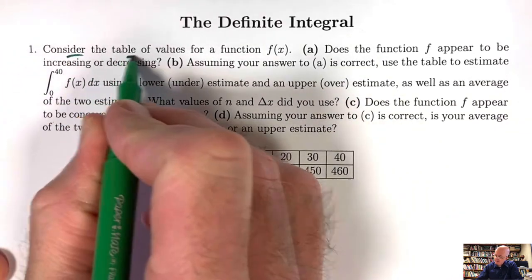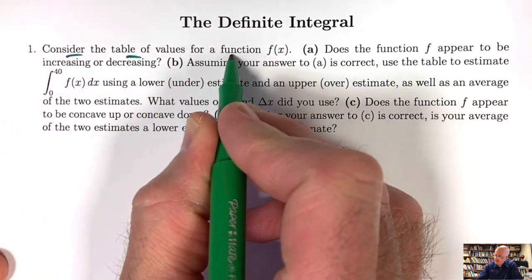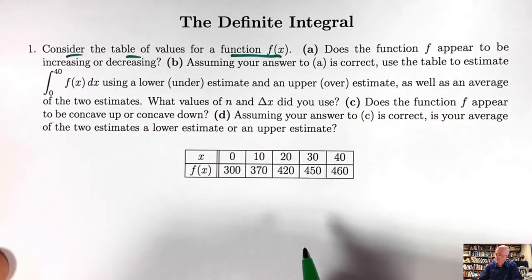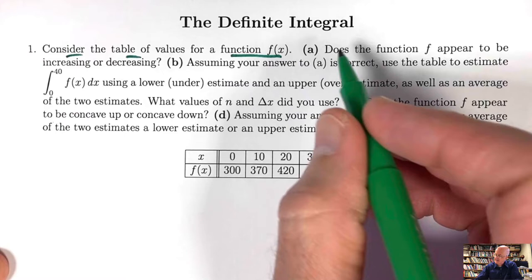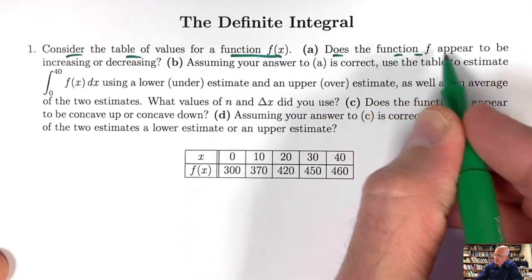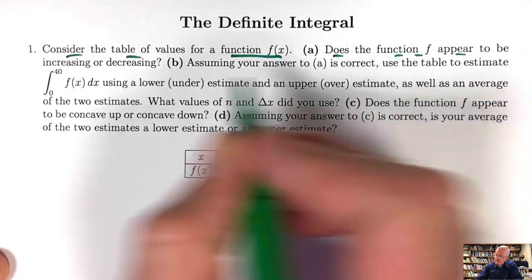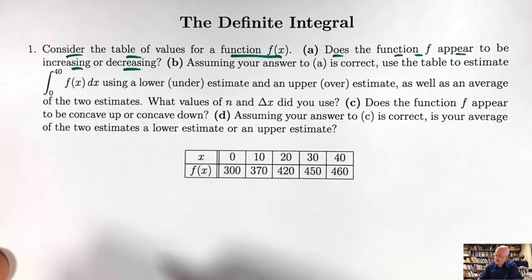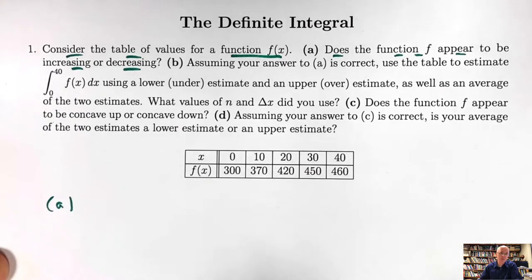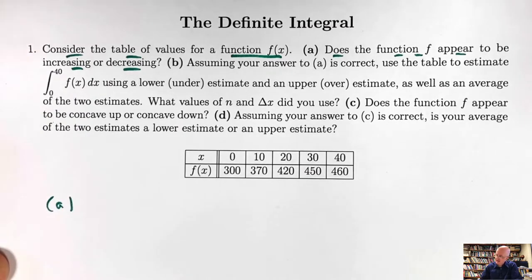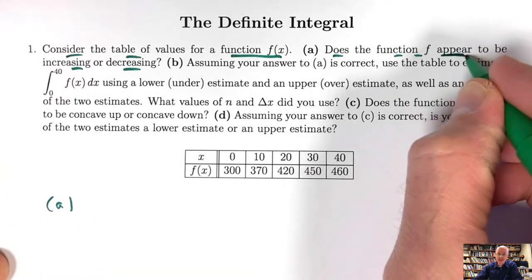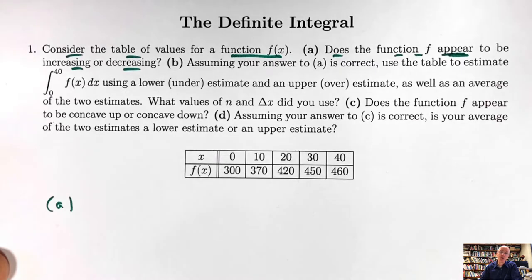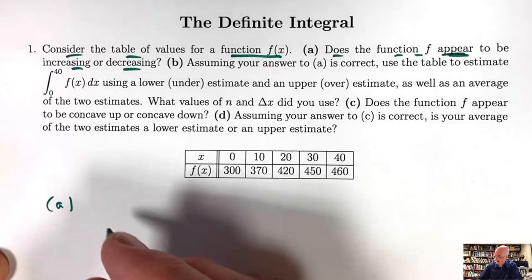Number one: consider the table of values of the function f of x shown here. Part A says, does the function f appear to be increasing or decreasing? It is important to realize it's an appearance — what does it look like? It's not a definitive answer because we only have a finite set of data points for the function f.